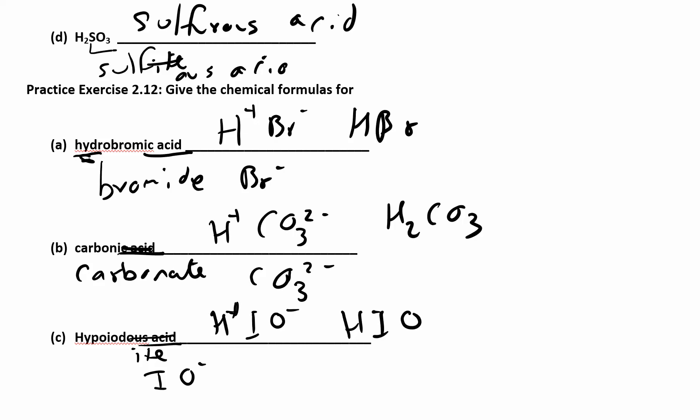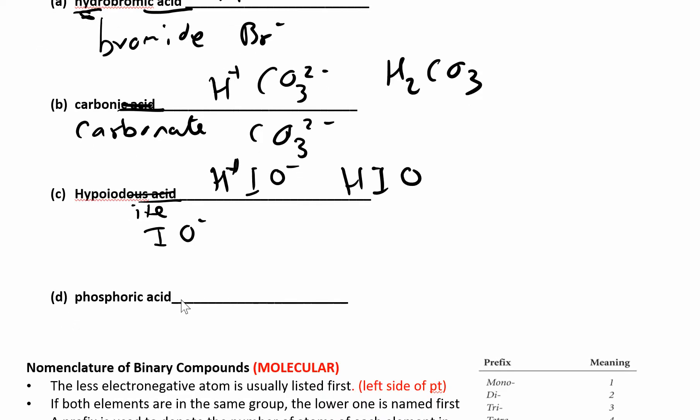Last one: phosphoric acid. -ic acid must have come from an -ate. Came from not phosphorate, but phosphate. Phosphate is PO4 with a 3- charge. If you have hydrogen, hydrogen is always H⁺, so when you crisscross you have H3PO4. You need three of those H⁺ ions to balance out the negative 3 charge. That is phosphoric acid, and that's how you name acids.